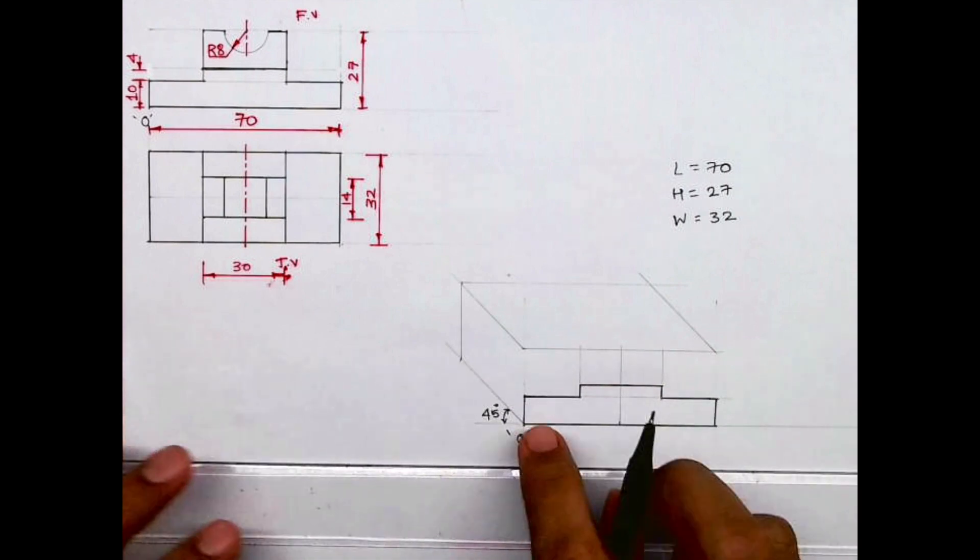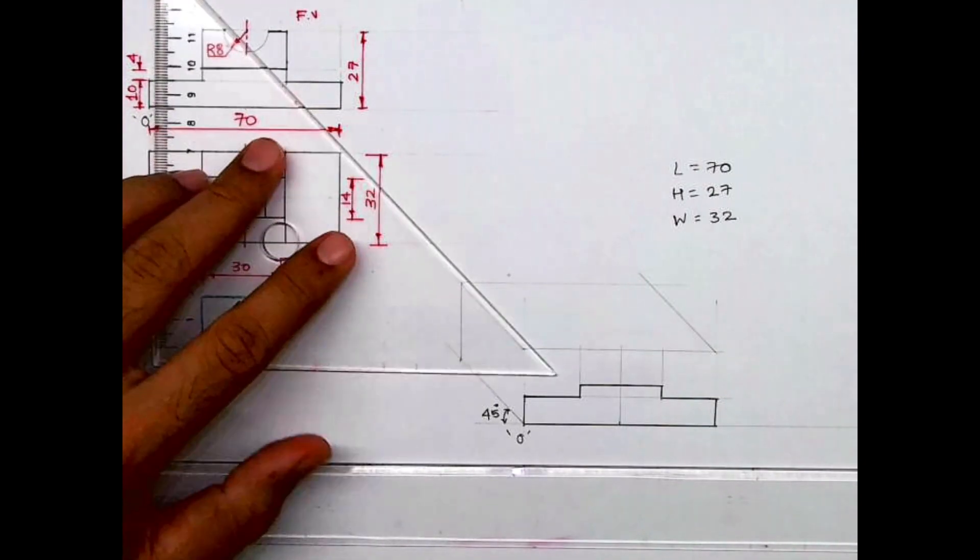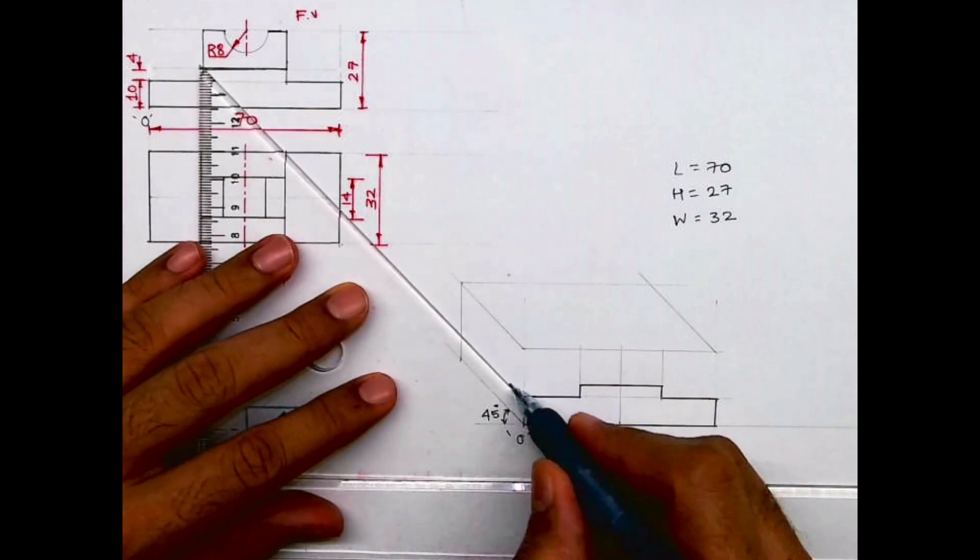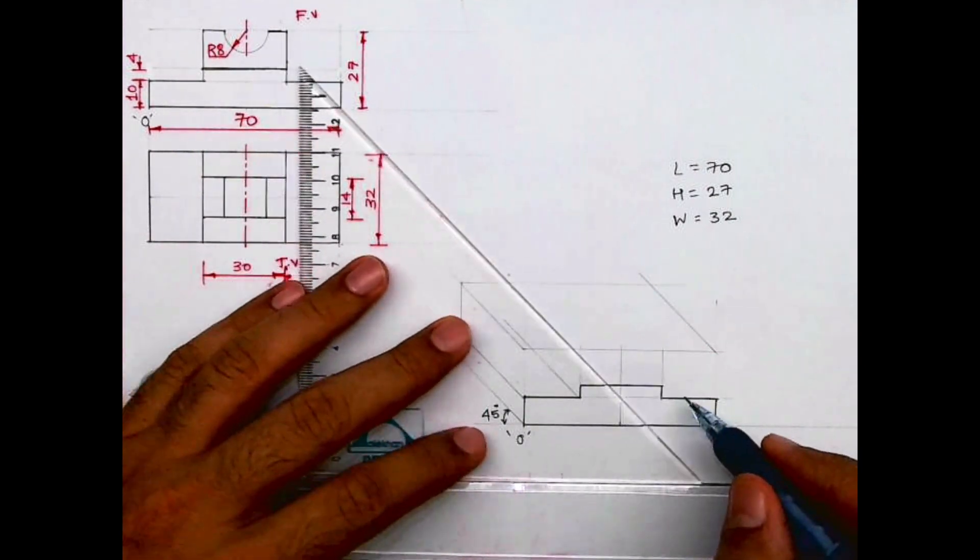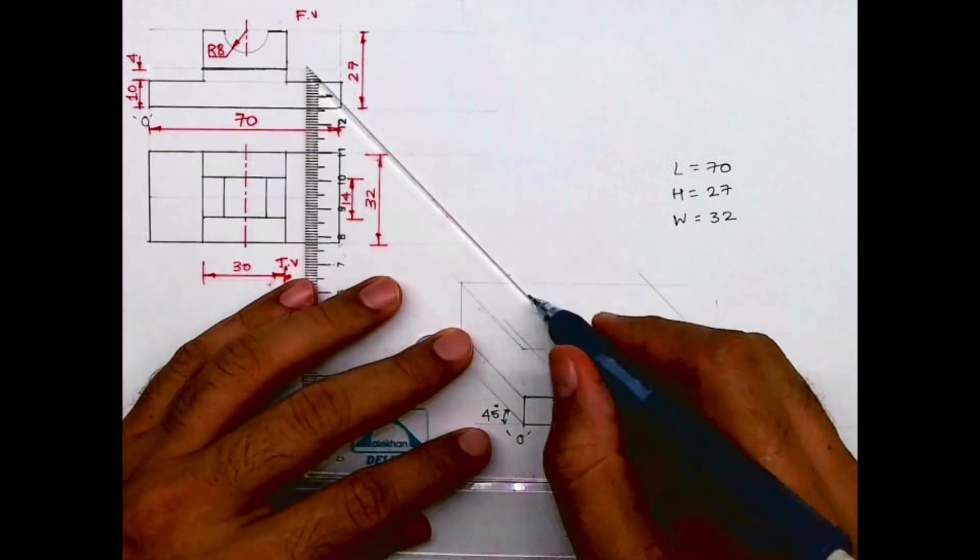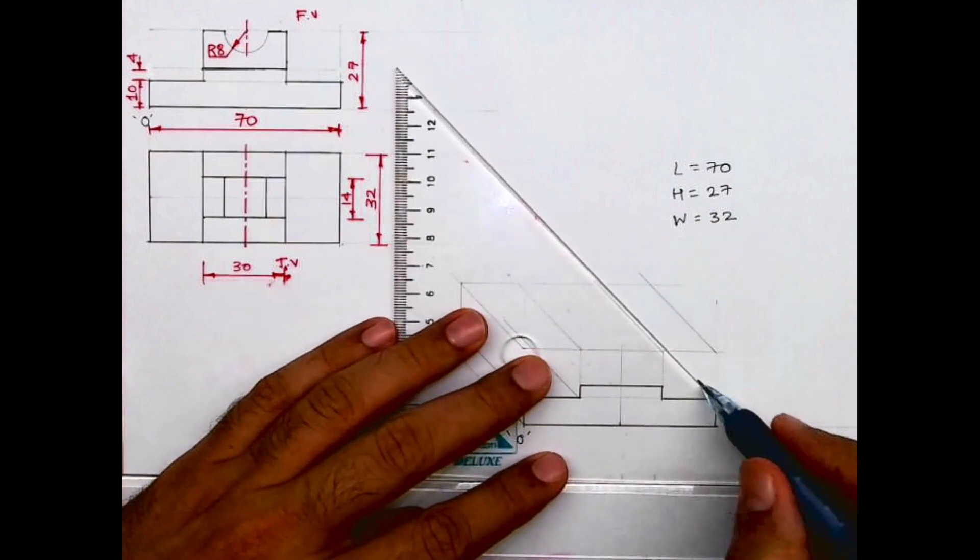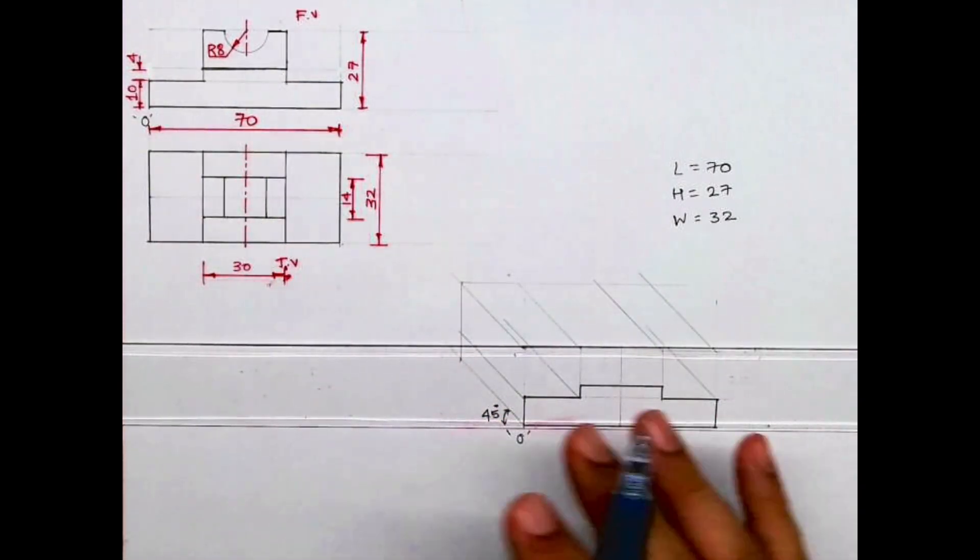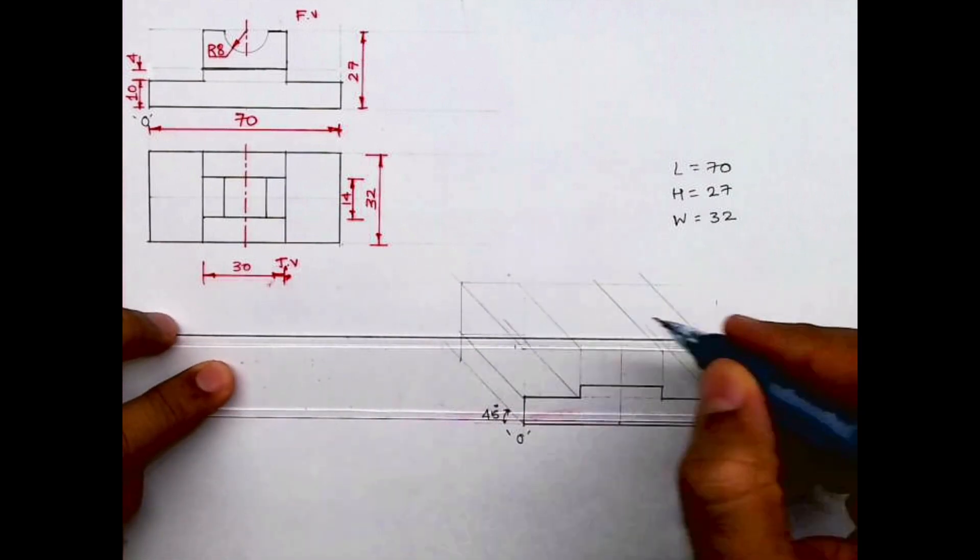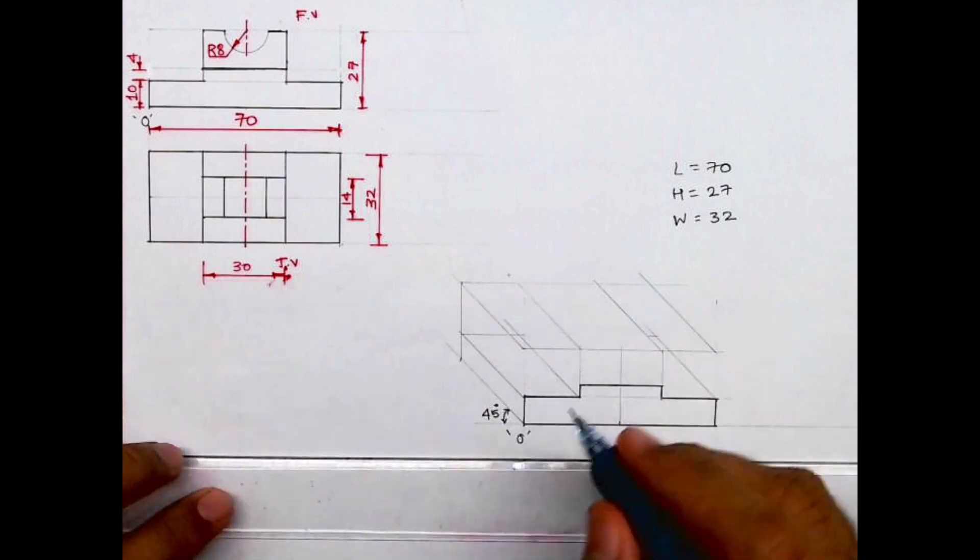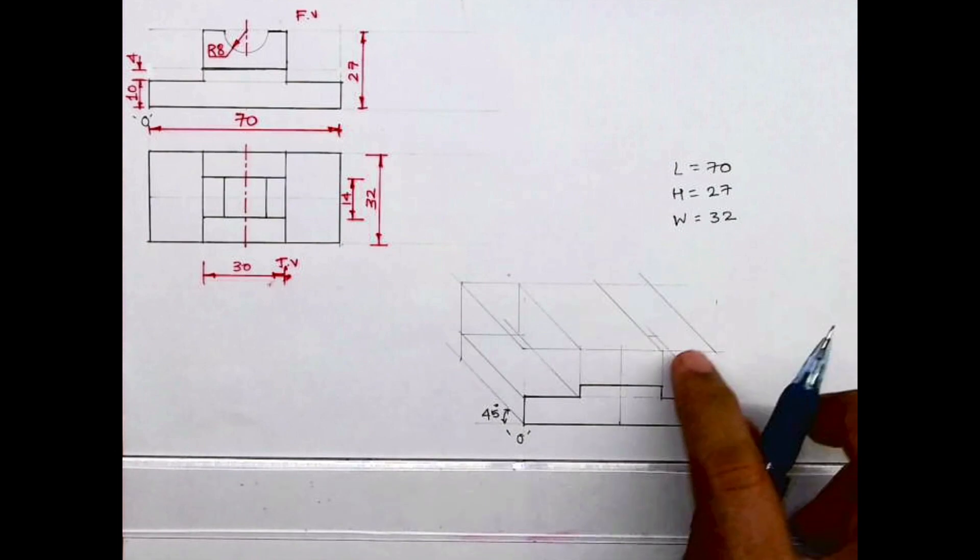I see this. So whatever is there in the front, the same thing is behind, so we can take all these points behind by 32. See this and we'll join this. So we'll get this entire part.